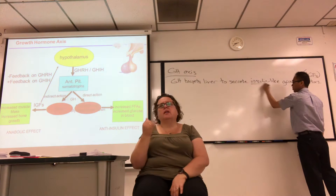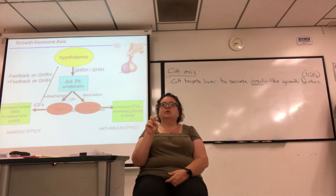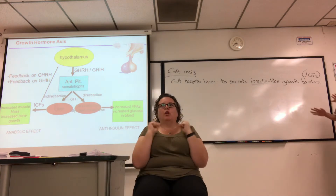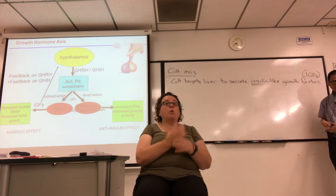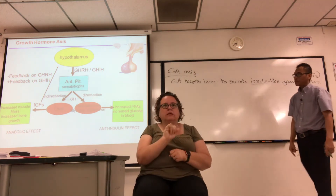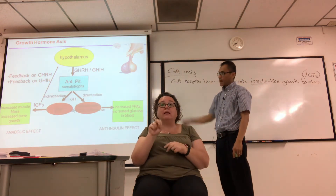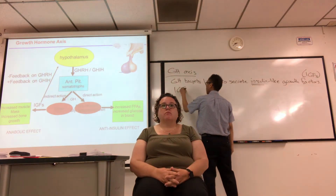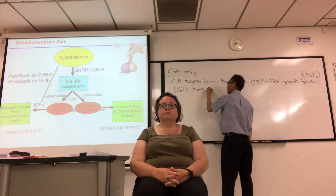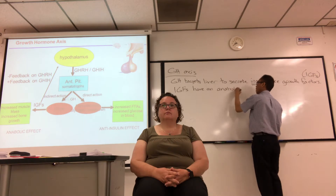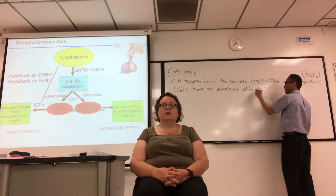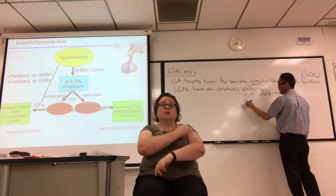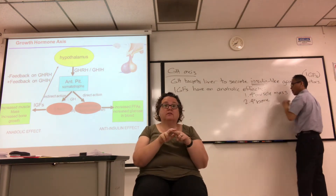So what growth hormone does through IGFs: you increase lean mass — increase muscle mass, increase bone and cartilage growth. We say the body is roughly 80% lean mass and 20% fat on average. Lean mass includes mostly muscle but also bone and blood. That's the anabolic effect of growth hormone.